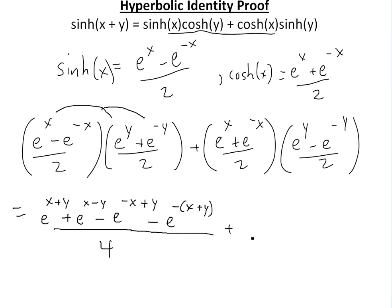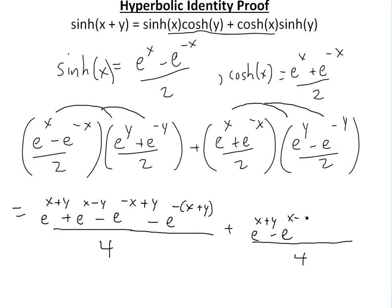Then plus the second product, also divided by 4. This expansion is very similar. e to the x times e to the y gives e to the x plus y. Then e to the x times negative e to the negative y gives negative e to the x minus y. Then e to the negative x times e to the y gives plus e to the negative x plus y. And the last term, negative e to the negative x times negative e to the negative y, gives negative e to the negative x plus y, since negative x minus y equals negative of x plus y.